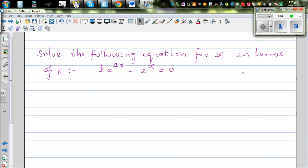Solve the following equation for x in terms of k. The equation is k times e to the power 2x minus e to the power x equals 0.